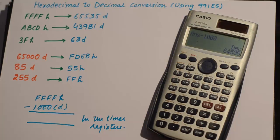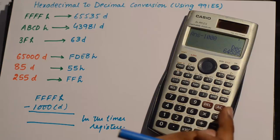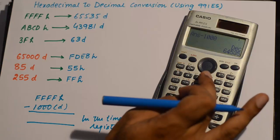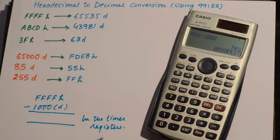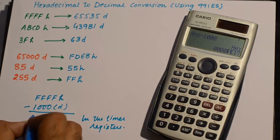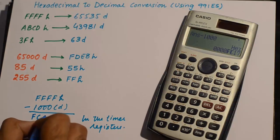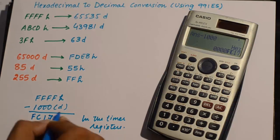This becomes 64535, and now you can turn it back into hexadecimal. This turns out to be FC17.